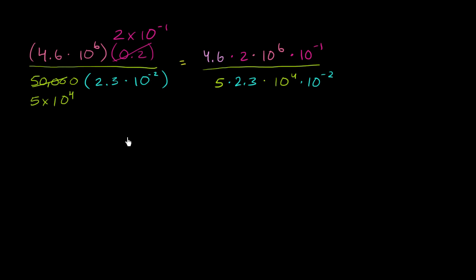And now let us attempt to simplify this thing. So here we have 4.6 times 2 - so 4.6 times 2 is 9.2. And then 10 to the sixth times 10 to the negative 1 - we have the same base, we're taking the product, we can add the exponents. It's going to be 10 to the sixth minus 1, or 10 to the fifth power.